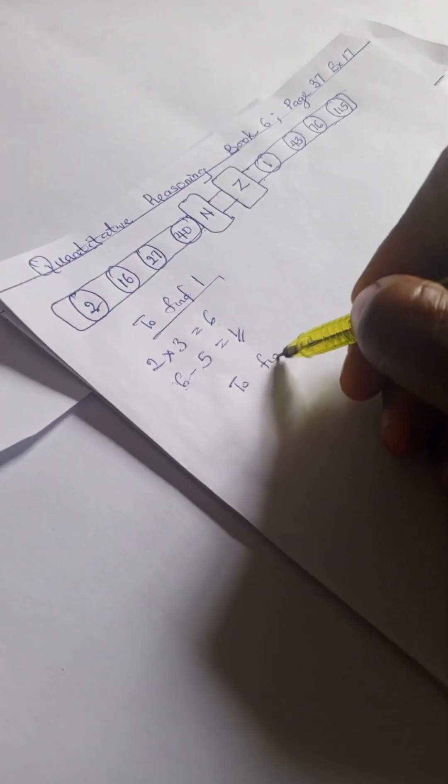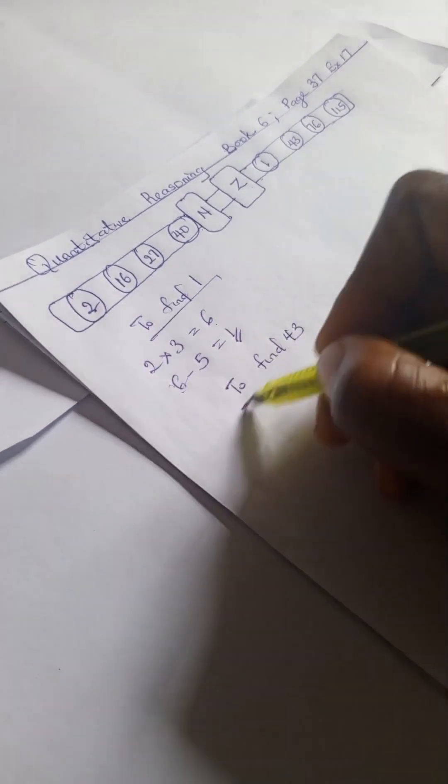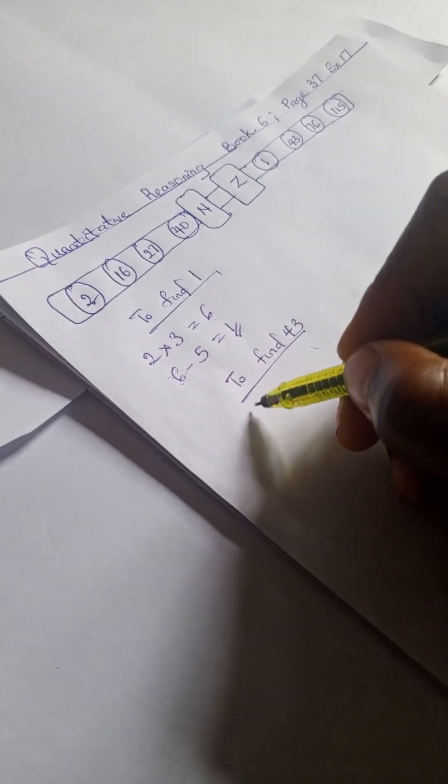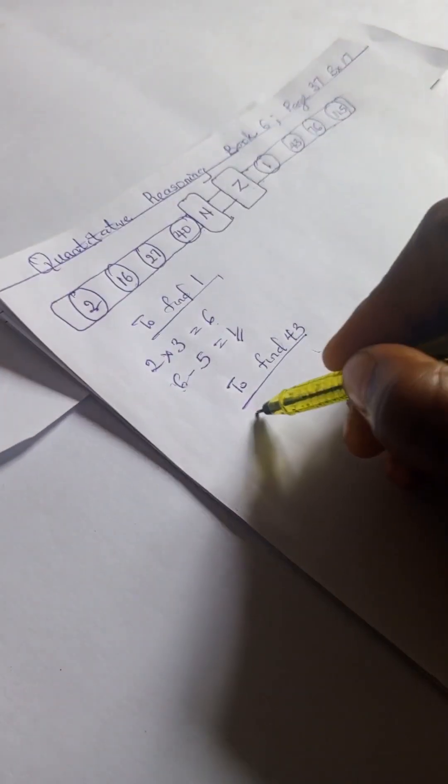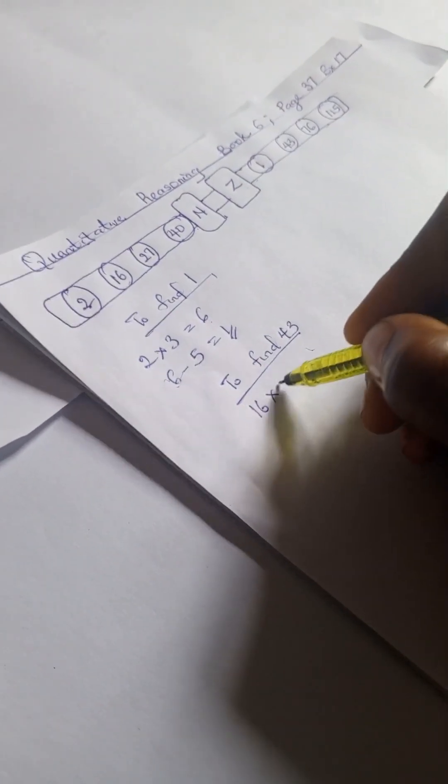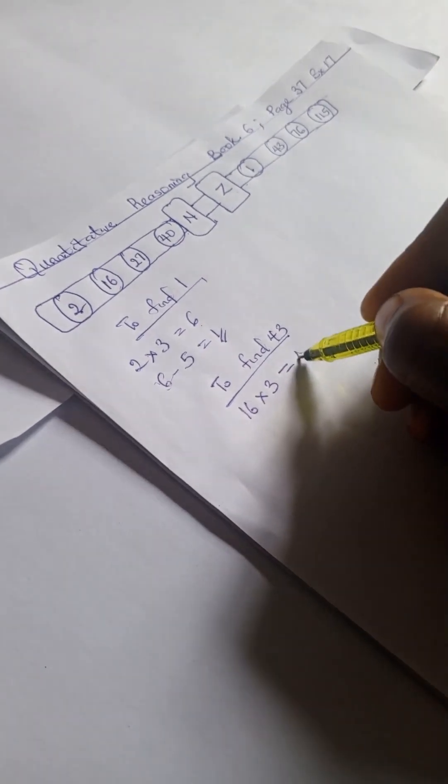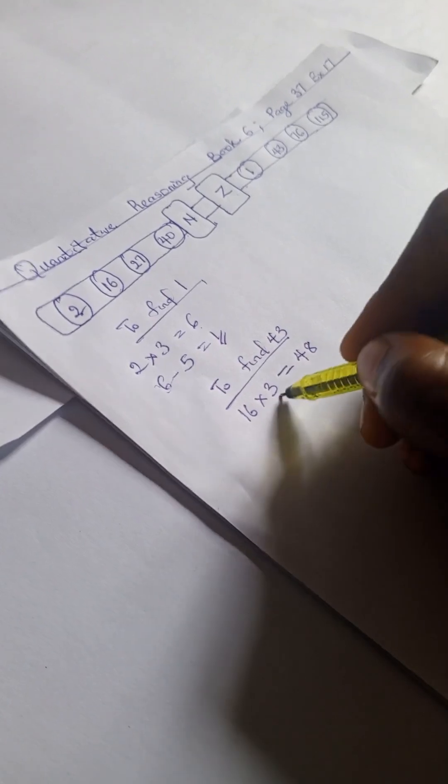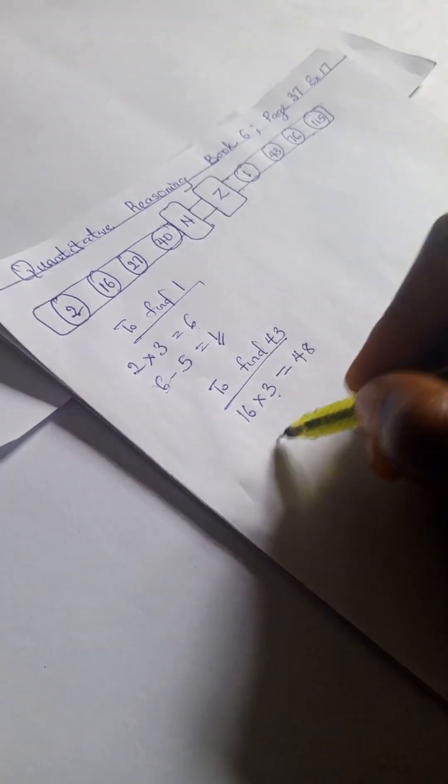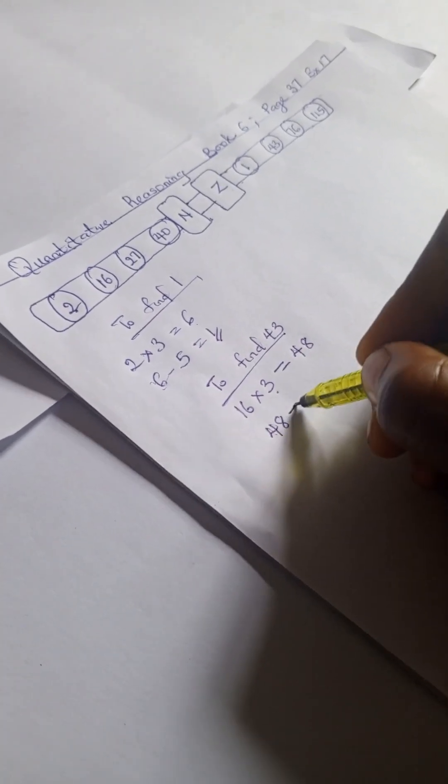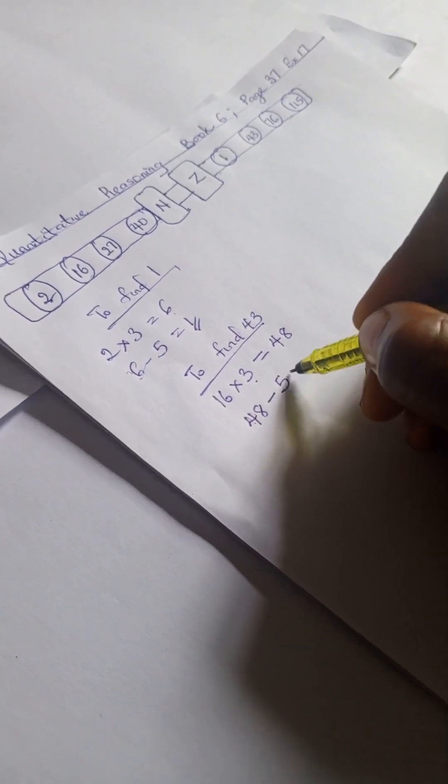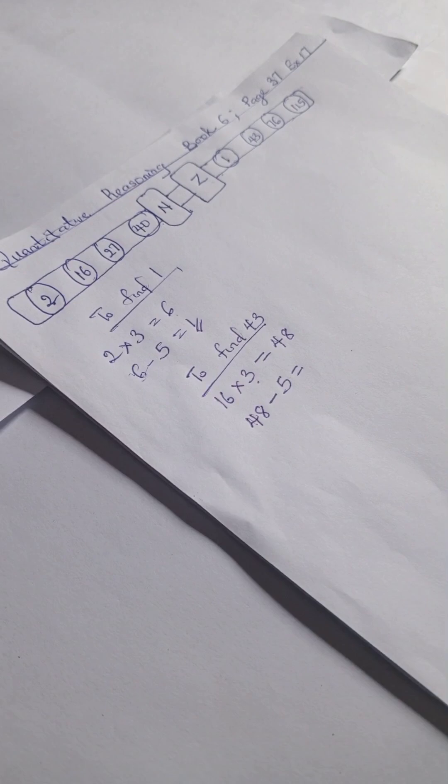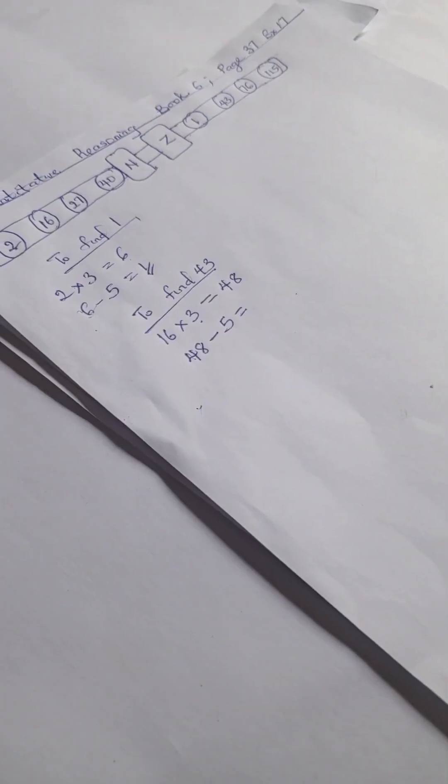To find 43, we're going to have 16 here times 3. That gives us 48. Remember our imaginary 3. And 48 minus our imaginary 5 gives us 43.